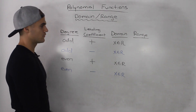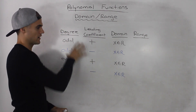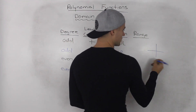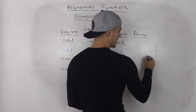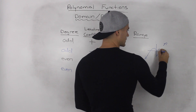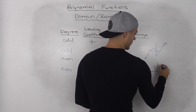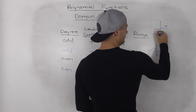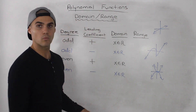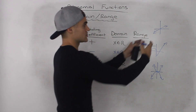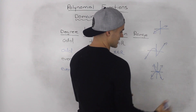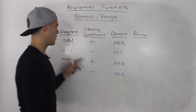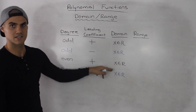The domain of any polynomial function is always going to be equal to x is an element of real numbers, no matter which case you're dealing with. If you think about a polynomial function and how it looks — whether it's a parabola opening up or down, or even a line — there's an infinite amount of possibilities, but no matter what polynomial function you draw, there's never any limit on the x values. The x values can always be anything, so the domain for all polynomial functions is always x is an element of real numbers.